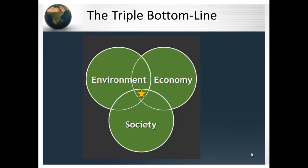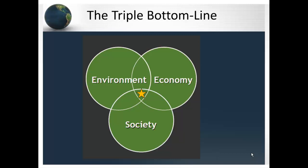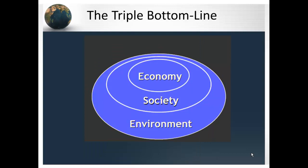This is the triple bottom line, a depiction of the three components of sustainability. It says that it is possible to create a thriving economy while maintaining a flourishing environment and building a strong and equitable society. But don't be confused by this illustration — a sustainable future does not only exist in the intersection of these three components. We need to take a systems view of sustainability, where the economy exists within the society, which exists within an environment with a myriad of interdependencies among the three.